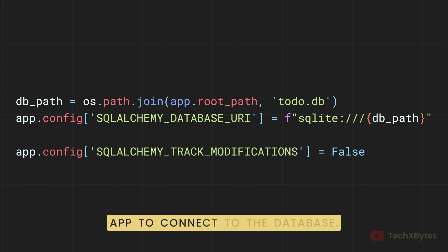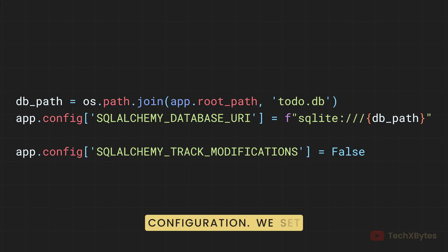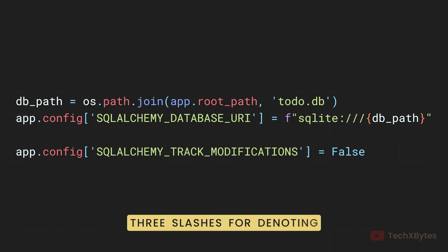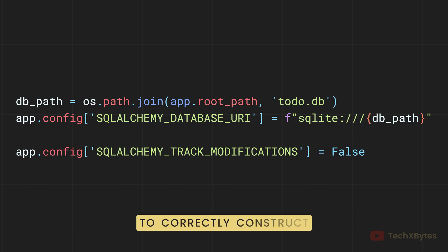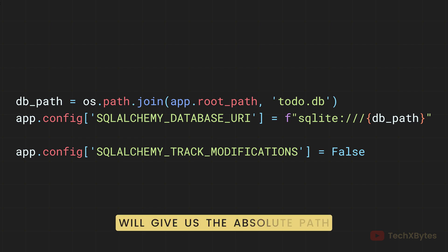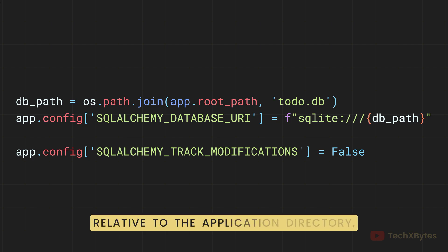Next, we configure our Flask app to connect to the database. app.config is a dictionary-like object holding the application's configuration. We set the SQLAlchemy database URI key. The value specifies the database type and the path to the database file — in this case, SQLite followed by three slashes for denoting a file-based SQLite database. We use os.path.join to correctly construct the path to todo.db within our project's root path, using app.root_path to get the absolute path to the directory where our Flask application is located. This ensures the database file is created in the same directory as our application and that our code works correctly regardless of where the application is run from.